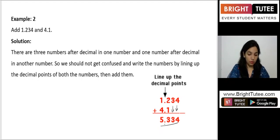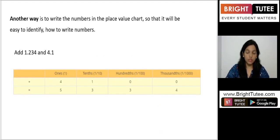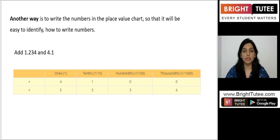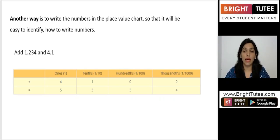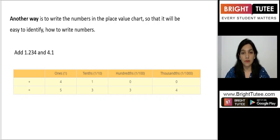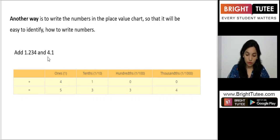Another way to add decimal numbers is to use a place value chart, which makes it easy to identify how to write the numbers correctly. Let us solve the same example — 4.1 and 1.234 — using the place value chart method.